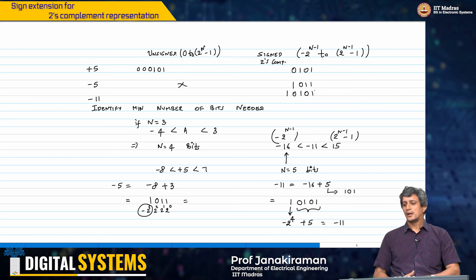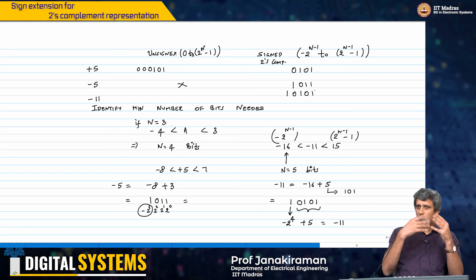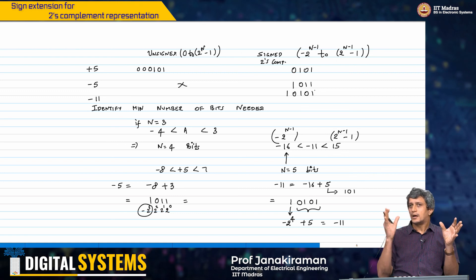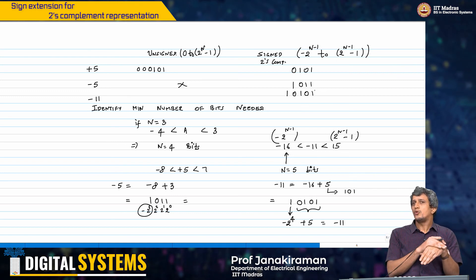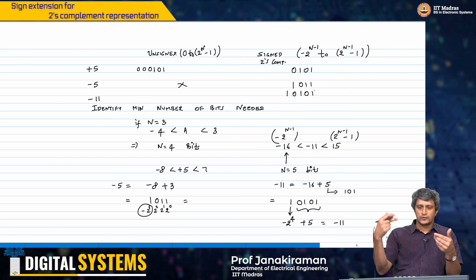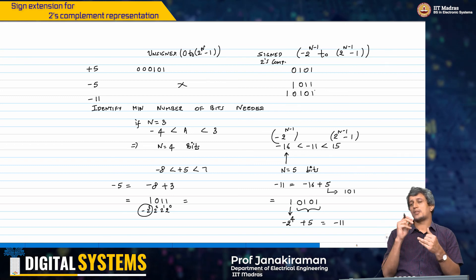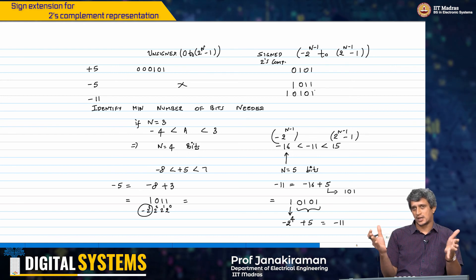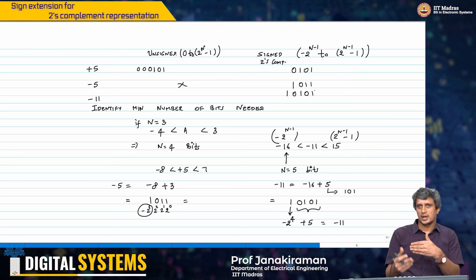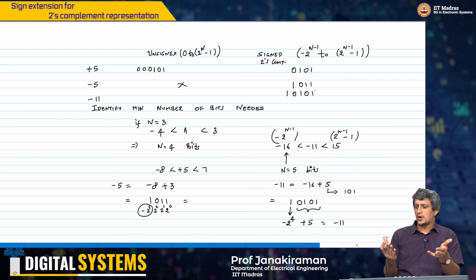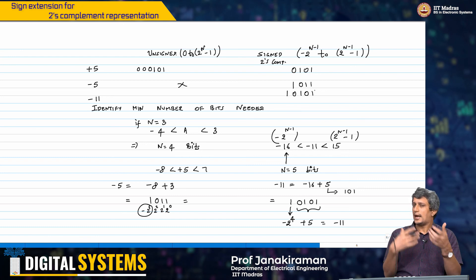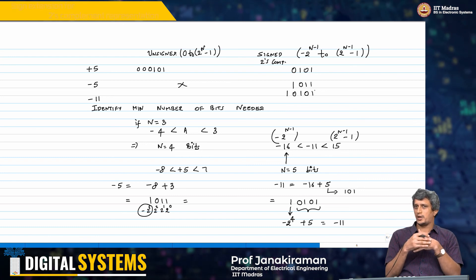So with that, we have looked at the 2's complement representation quite comprehensively, both intuitively and mathematically. We will now use this 2's complement representation in order to do logical operations as well as arithmetic operations going forward. Every time you build a circuit using logic gates to perform a certain operation, you should make sure that it is consistent with the decimal operations as well, and I will highlight that more as I go through this course.